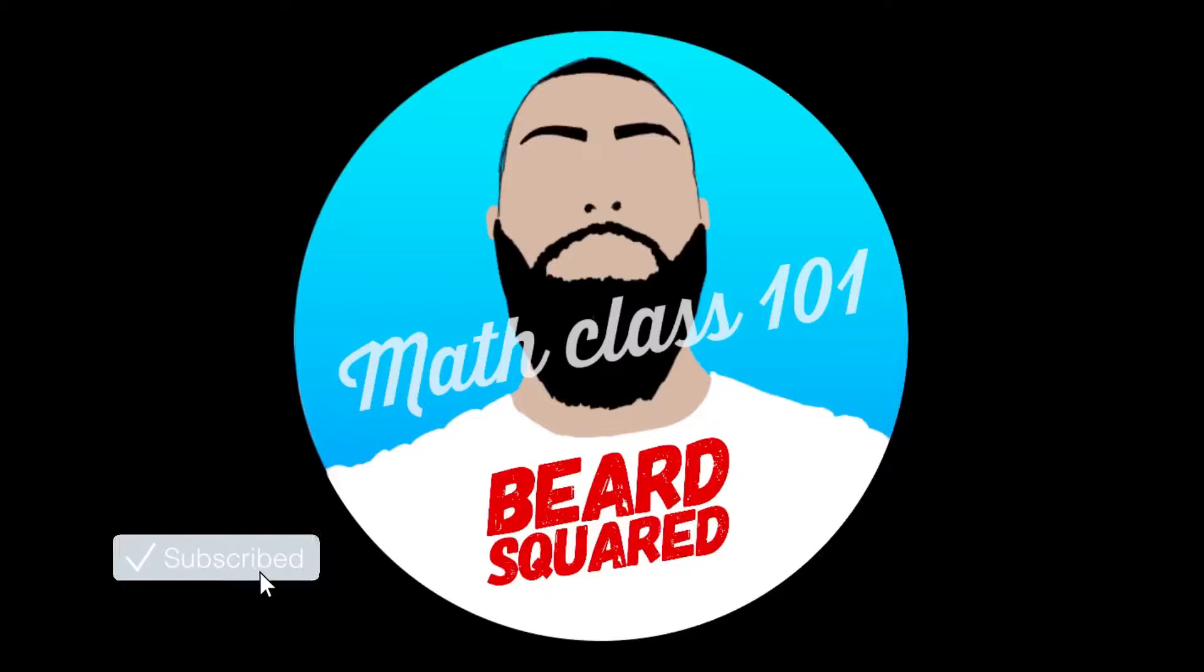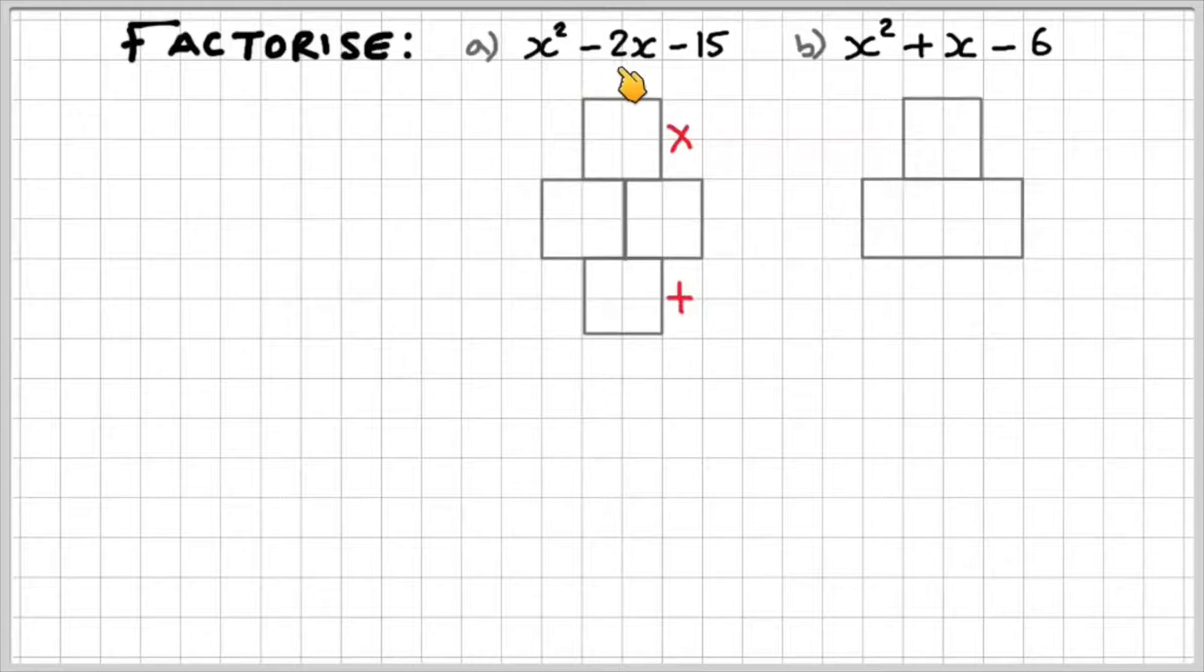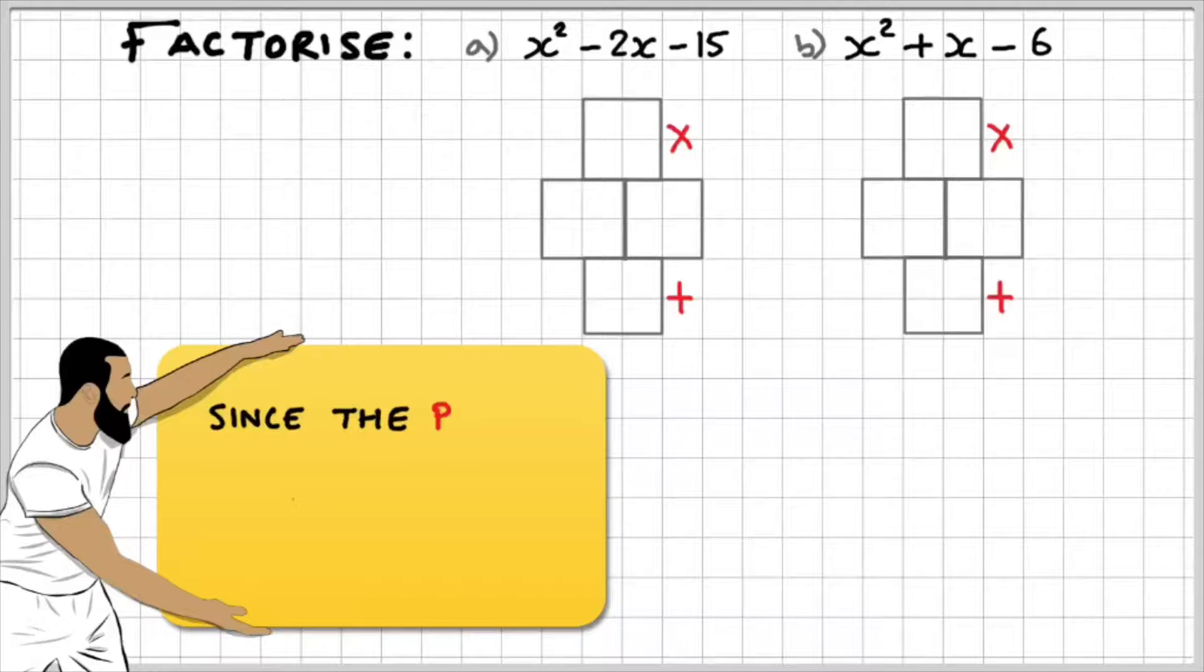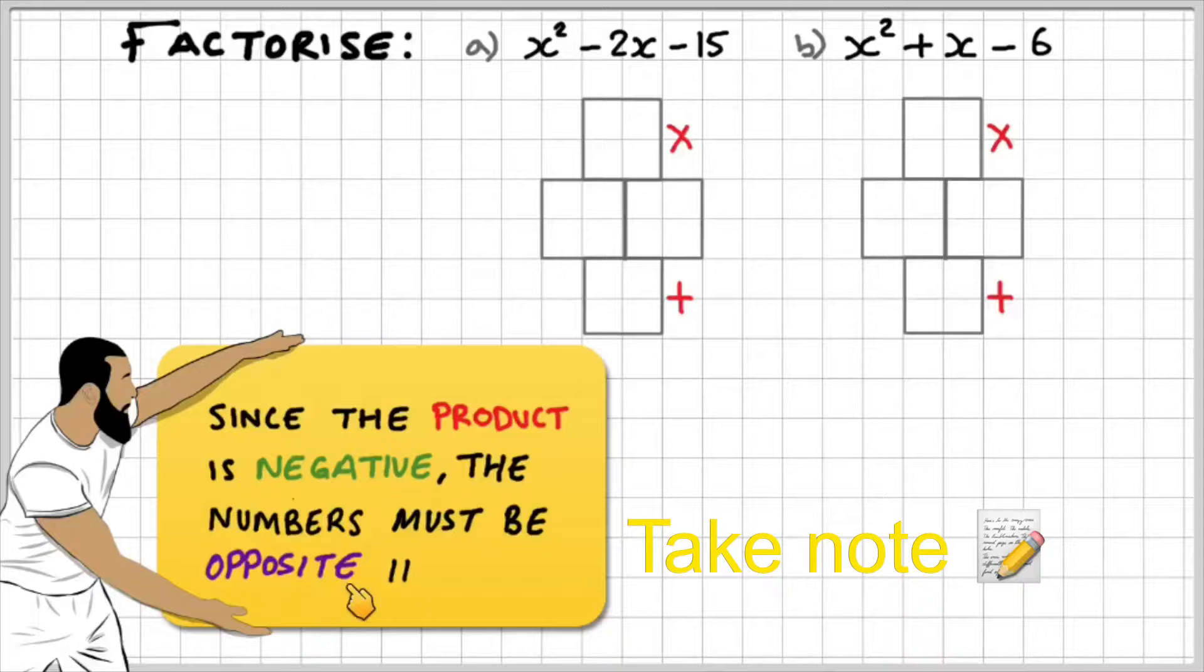Let's look at our last example. In this case, we have x squared minus 2x minus 15, and then x squared plus x minus 6, but our constant terms are both negative. We can summarise this by saying, since the product is negative, the numbers must be of opposite sign.